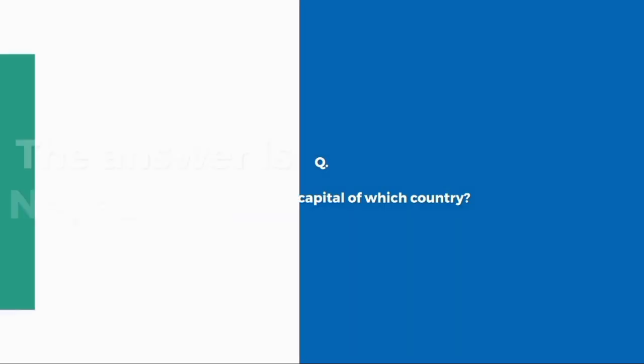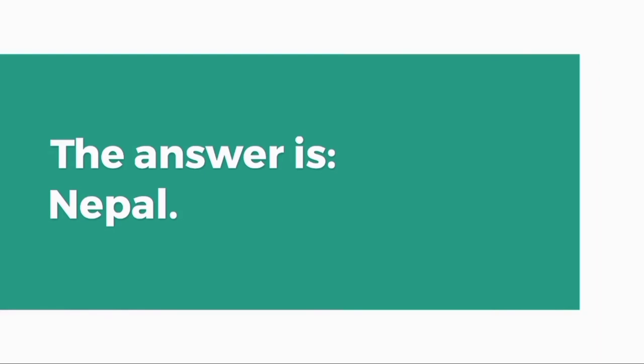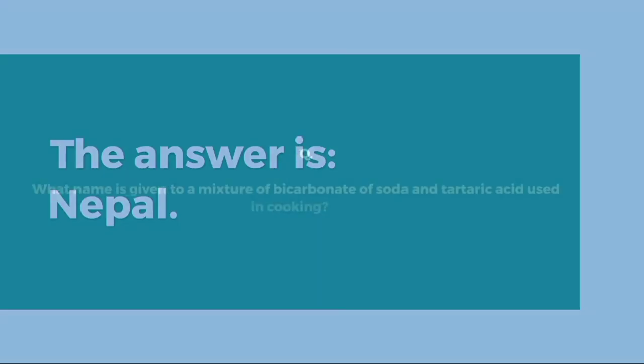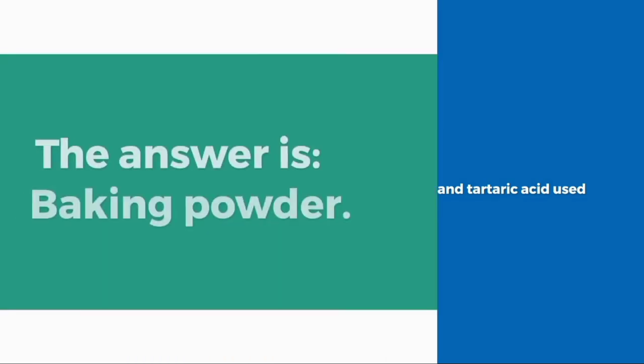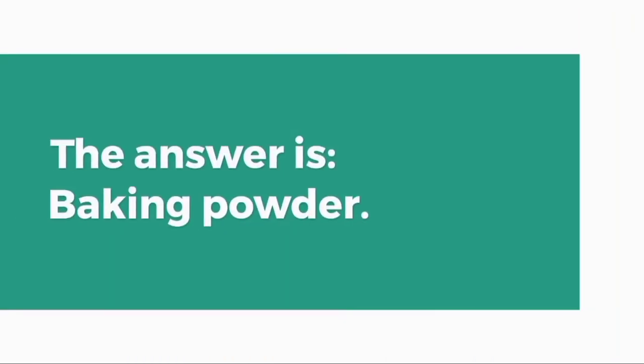Kathmandu is the capital of which country? Nepal. What name is given to a mixture of bicarbonate of soda and tartaric acid used in cooking? Baking powder.